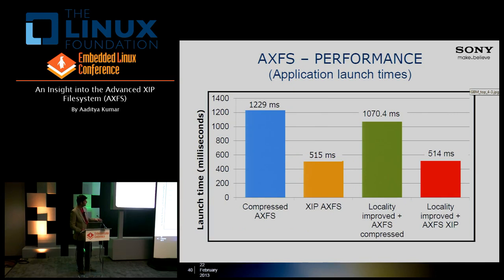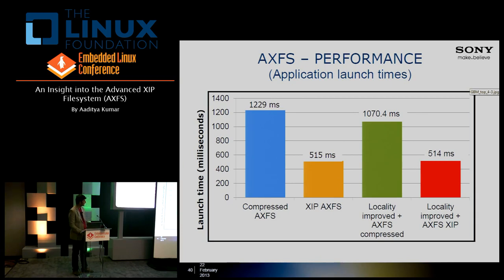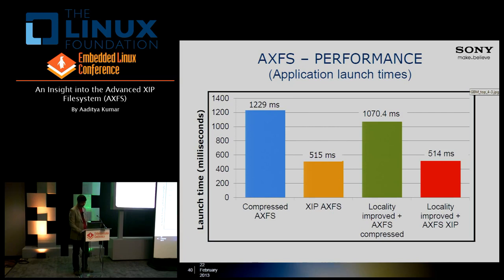These are the numbers for application launch time. The compressed AXFS takes the largest amount of time. The locality-improved AXFS takes a little less. The AXFS XIP images take the least amount of time, and the locality-improved AXFS and the normal XIP AXFS have almost the same performance. This shows the improvement that XIP gives in terms of application launch times.